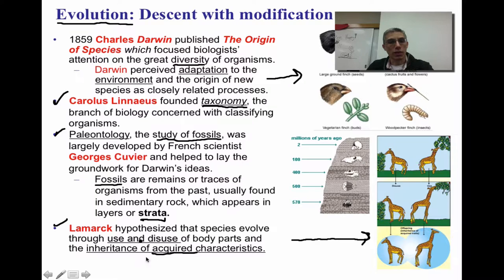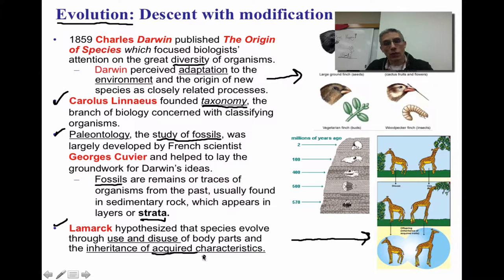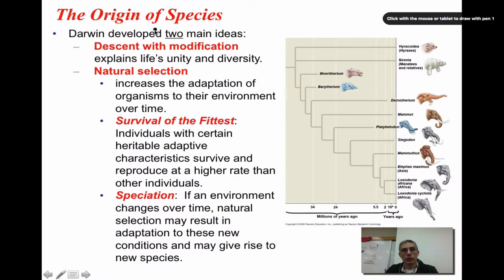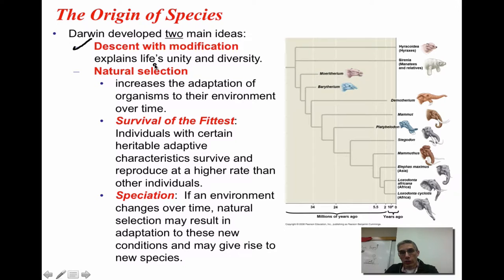Obviously, this is not the way it actually works — the idea of use and disuse isn't how characteristics are inherited. Darwin had actually developed two main ideas when it came to the origin of species. His first one was the idea of descent with modification, which would explain life's unity and diversity.